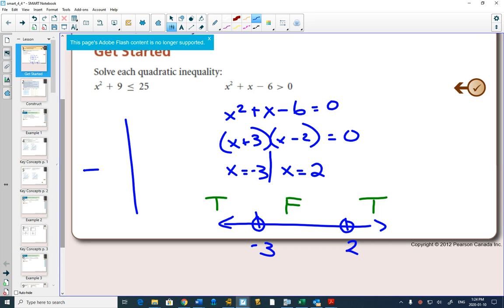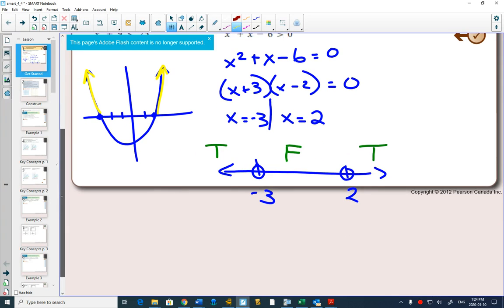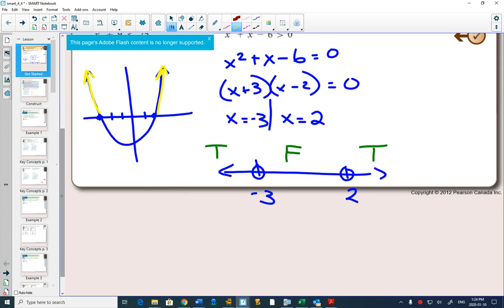Graphically, here's our graph. Which way does this parabola open? It opens up. Draw your x-intercepts of 2 and negative 3 opening up. Can you see that it's only bigger than 0 here and here? That matches up with those two true statements we had before.